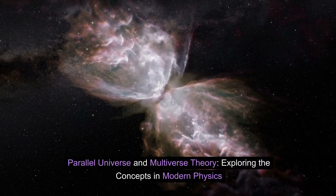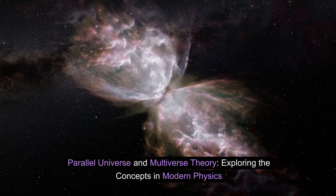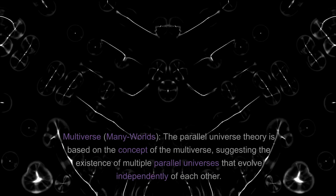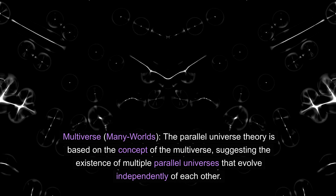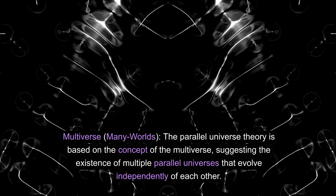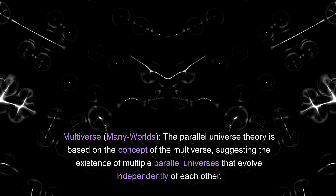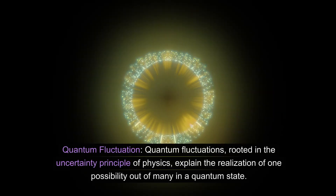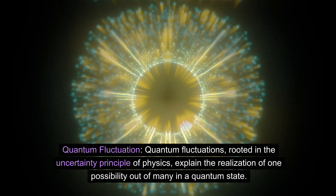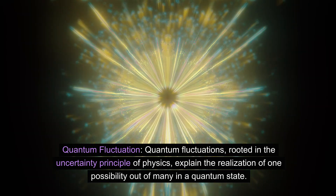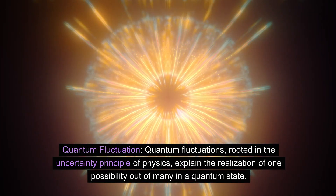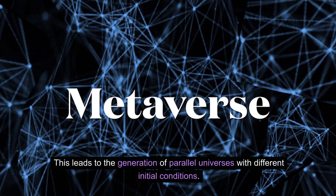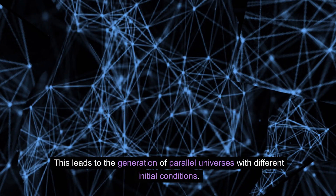Parallel Universe and Multiverse Theory: Exploring the concepts in modern physics. The parallel universe theory is based on the concept of the multiverse, suggesting the existence of multiple parallel universes that evolve independently of each other. Quantum fluctuations, rooted in the uncertainty principle of physics, explain the realization of one possibility out of many in a quantum state, leading to the generation of parallel universes with different initial conditions.